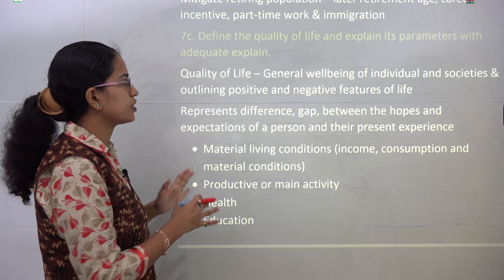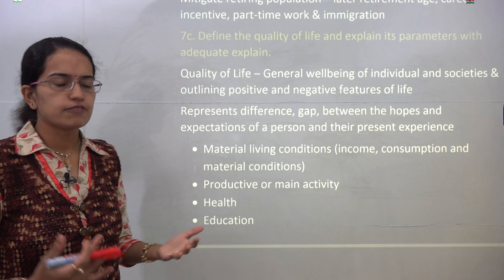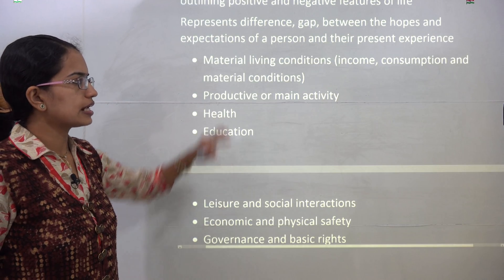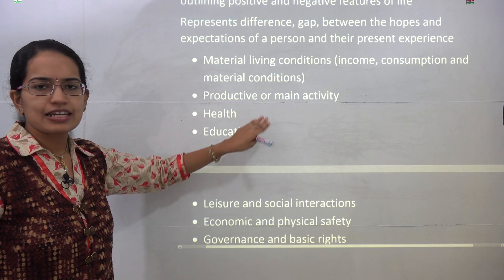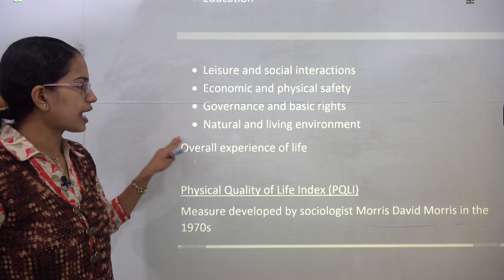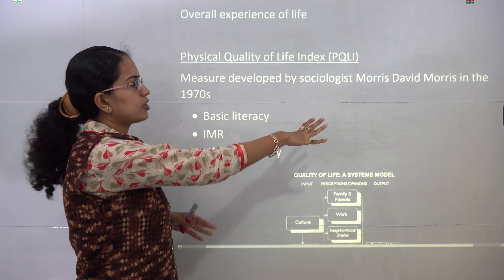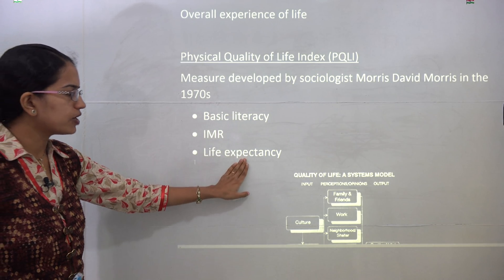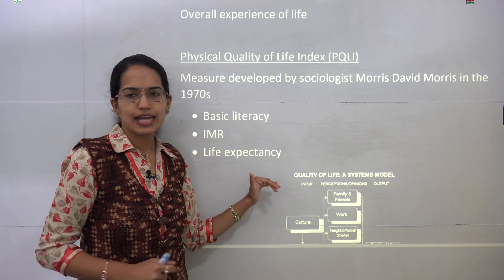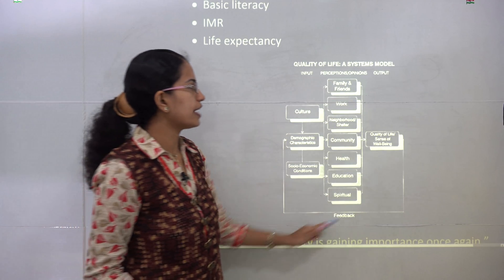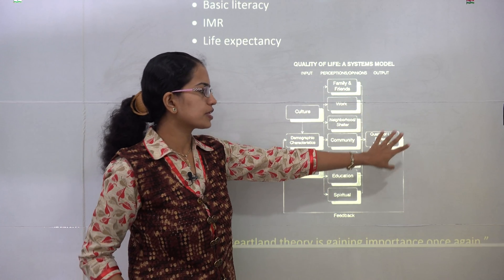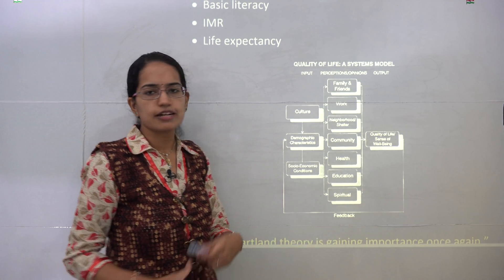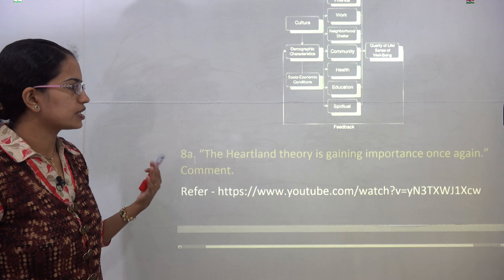The next is quality of life and its parameters. Quality of life talks about the general well-being of an individual, outlining the positive and negative features of life. Important conditions taken into account include income, income consumption, the main activity, predominant activities, health, education, leisure, economic activities, and governance. We also talk about the PQLI — Physical Quality of Life Index — given by Morris David Morris in the 1970s, working around three parameters: basic literacy, infant mortality, and life expectancy. Under the quality of life model, input includes various demographic, socioeconomic factors, culture, and perceptions — family, friends, relatives, communities, and spiritual aspects — with output being quality of life.